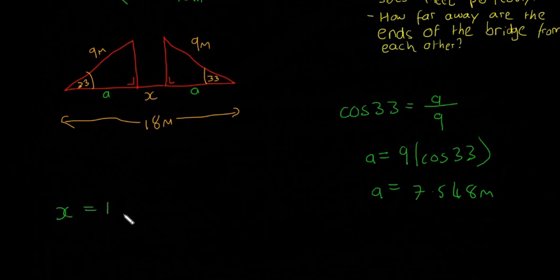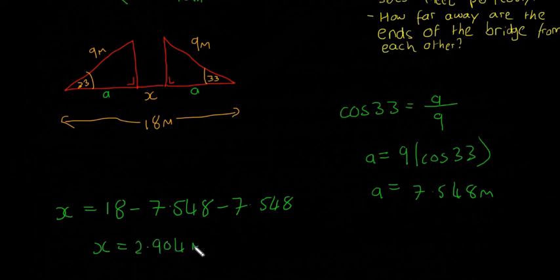We're going to say X is equal to 18 minus 7.548 minus 7.548. Our final answer for X ends up being 2.904 meters.